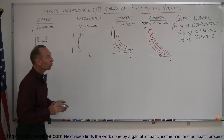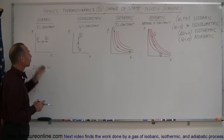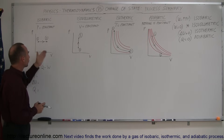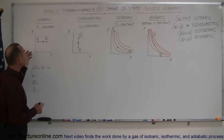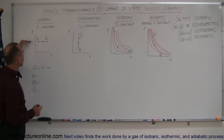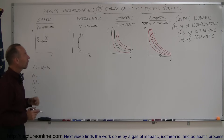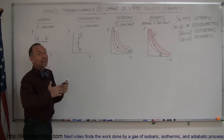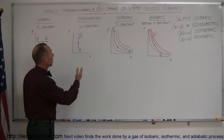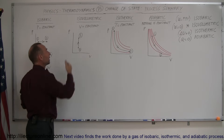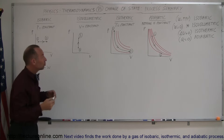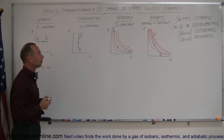We have the associated PV diagrams — pressure versus volume diagrams. When a gas expands in the isobaric process, it goes straight across; notice that the pressure doesn't change. In an isovolumetric process, the gas cannot expand because the volume is constant, so by adding heat to the gas, it will simply gain energy and therefore the pressure will increase.